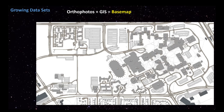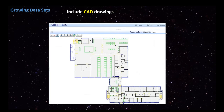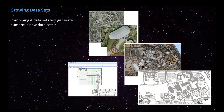We started generating data from that. First we generated our base map, then we gathered all our interior building CAD drawings from Arcibus and continued converting those into our GIS model. To this point we really only have four data sets — two that were purchased, one that was transformed, and one generated from the photos. It's from these four data sets that everything you're going to see today primarily deals with what we've been doing here at the University of Calgary.